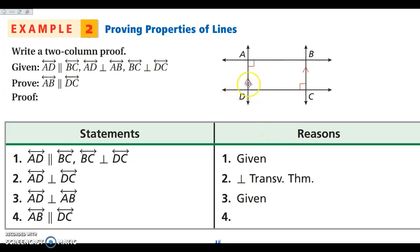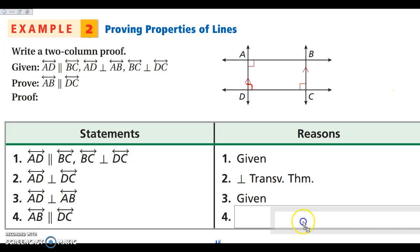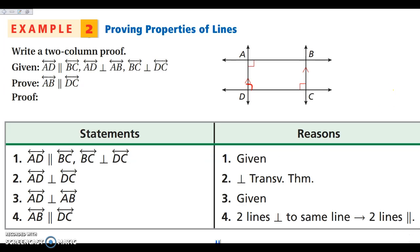Now that these are perpendicular and these are perpendicular, I have two lines that are perpendicular to the same line, so that means they must be parallel. This one doesn't have a simple name, so you write it out: two lines perpendicular to the same line means the two lines are parallel. So proofs are hard, but go ahead and write it down and we'll go over this more in class if needed.